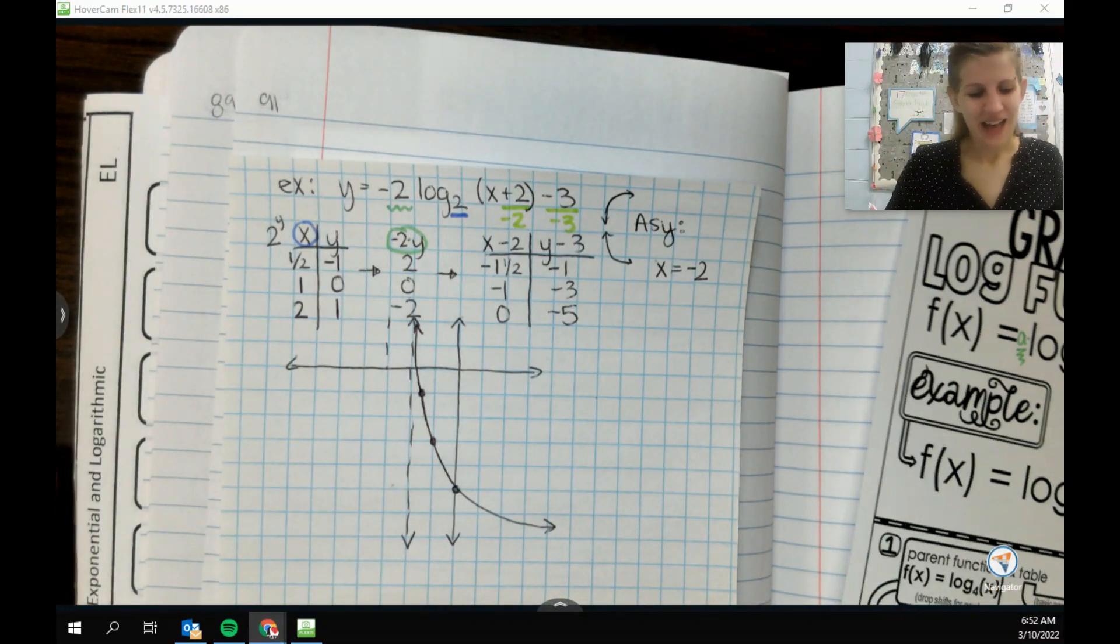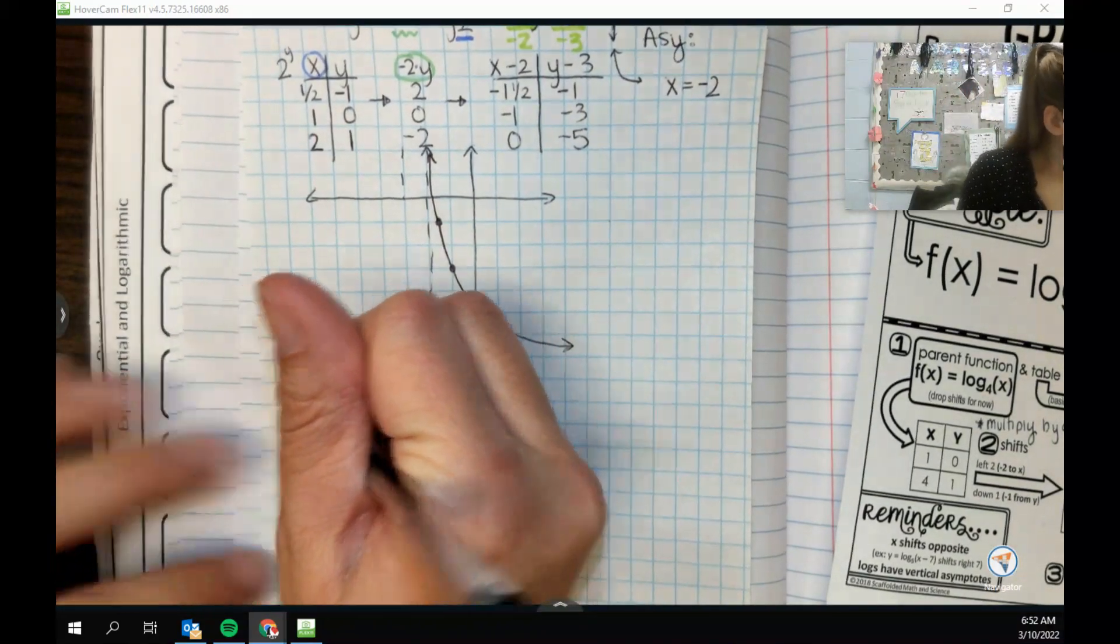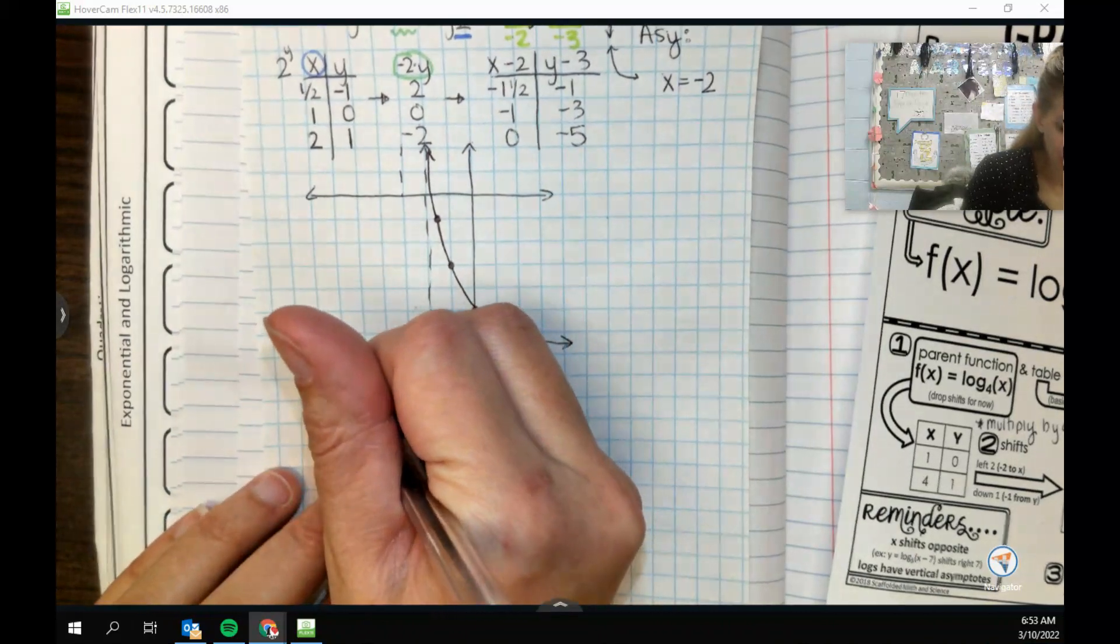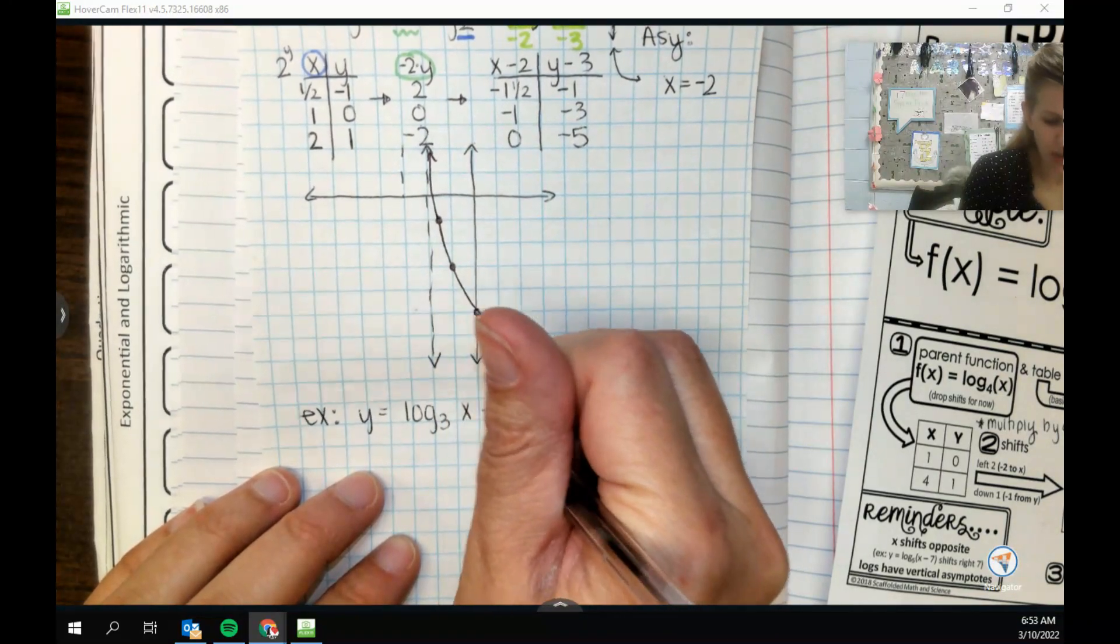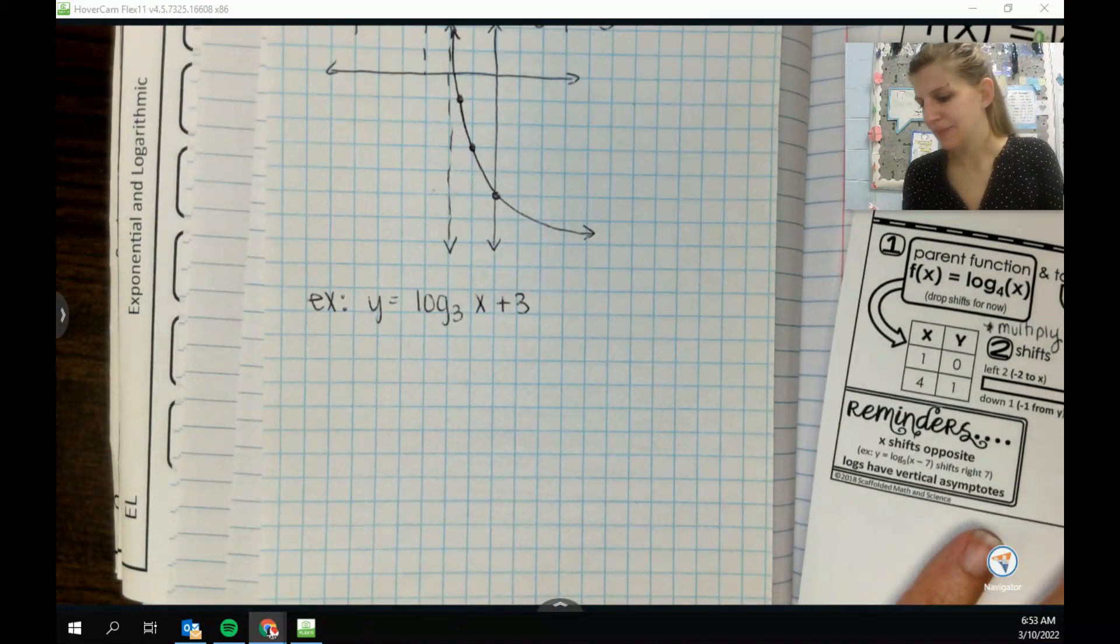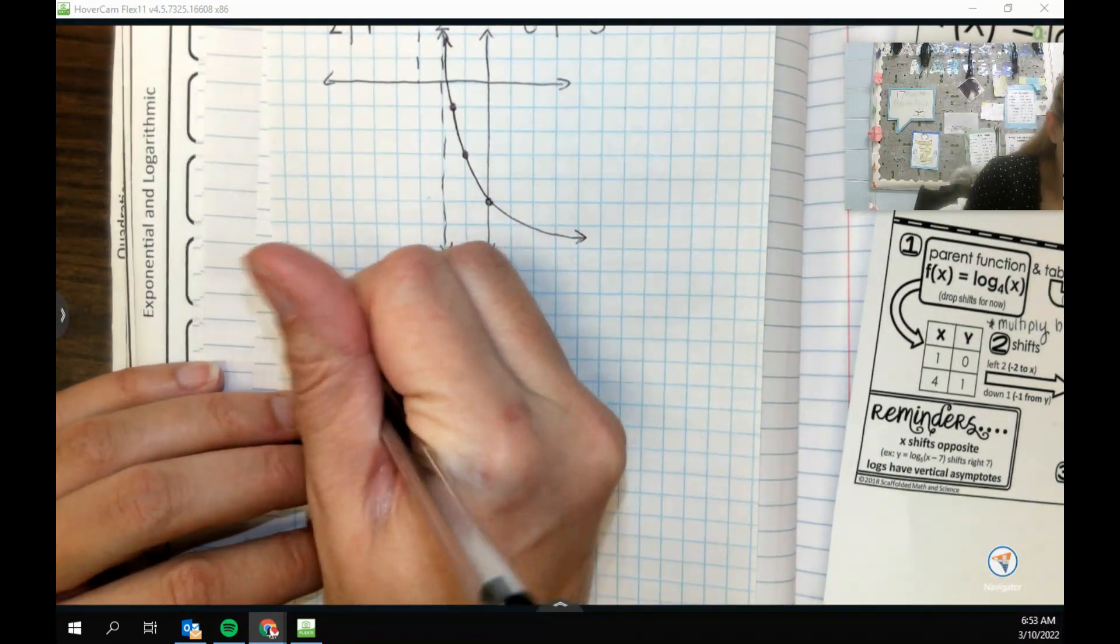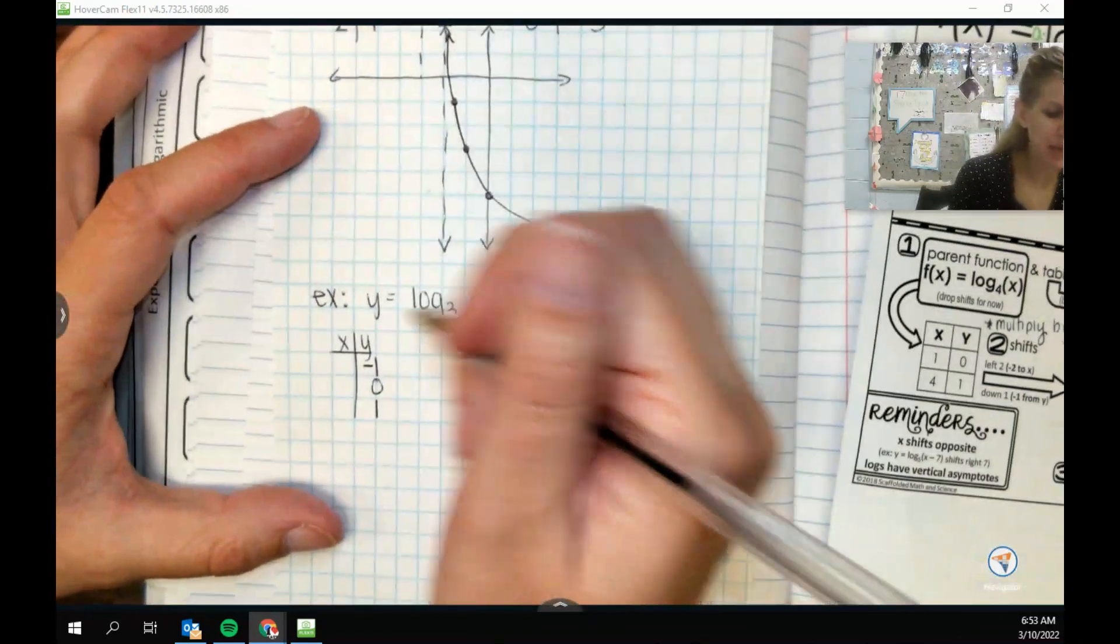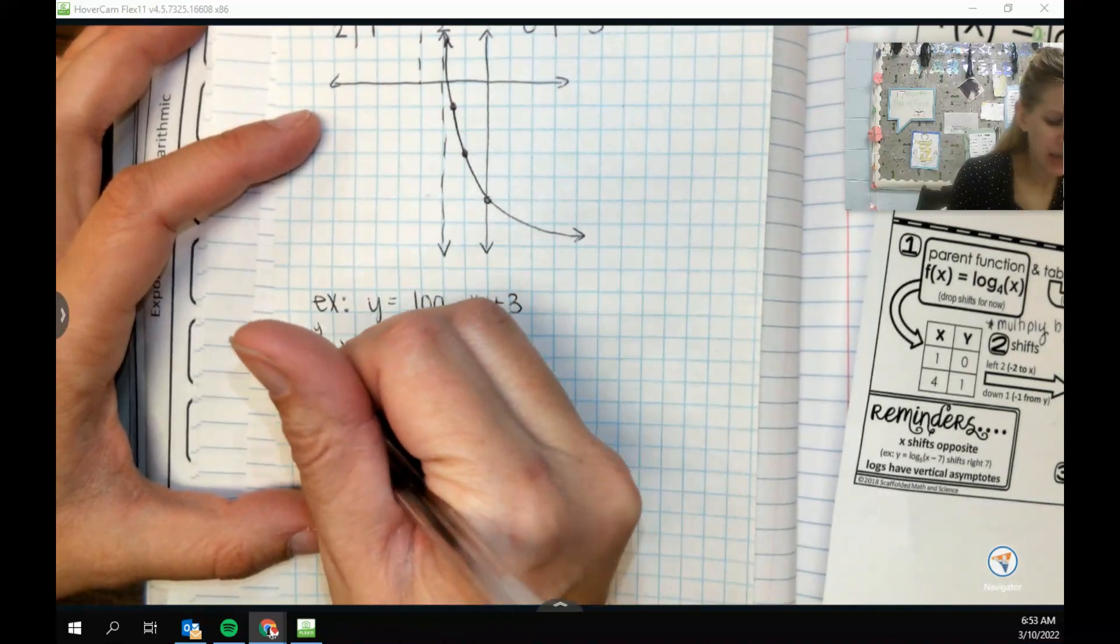These curves are so weird. Okay, let's try one more. Let's say we had y equals log base 3 of x plus 3. Something like that. I always feel like when numbers are missing, stuff can be a little tricky. Okay. So always, always, we want to start with our base table. We're going to pick y this time. So negative 1, 0, 1. And we're going to use our base number, which our base number is 3. So we're going to do 3 to the y. And then we're going to flip, always 1, stay the same.